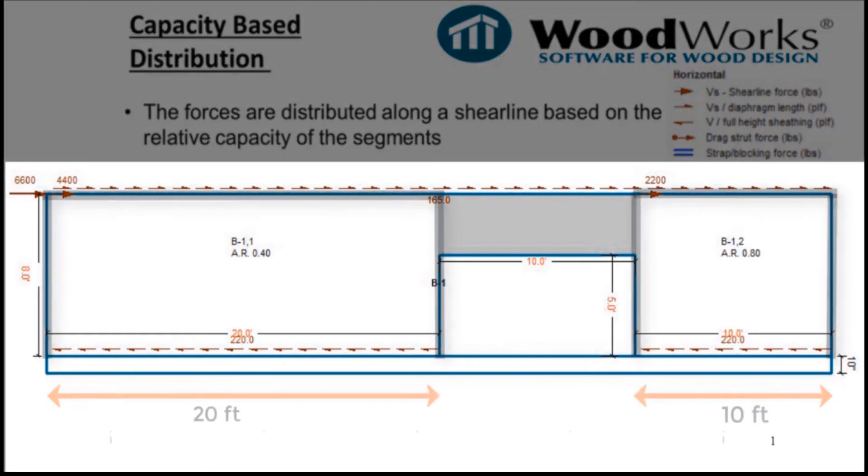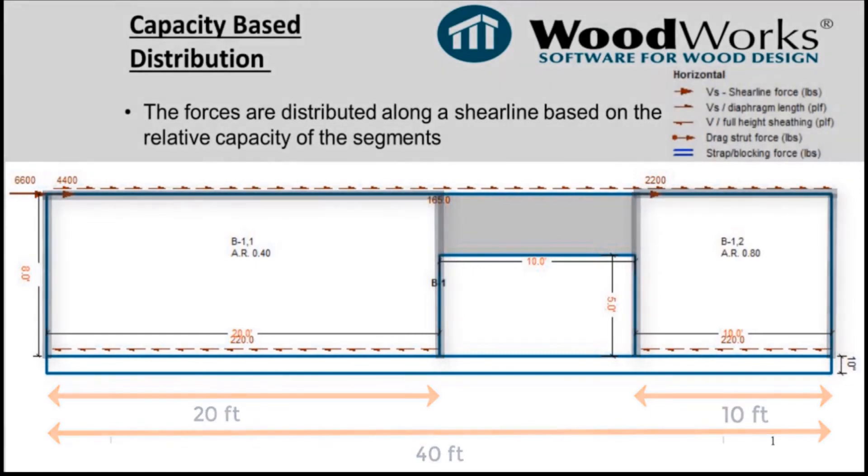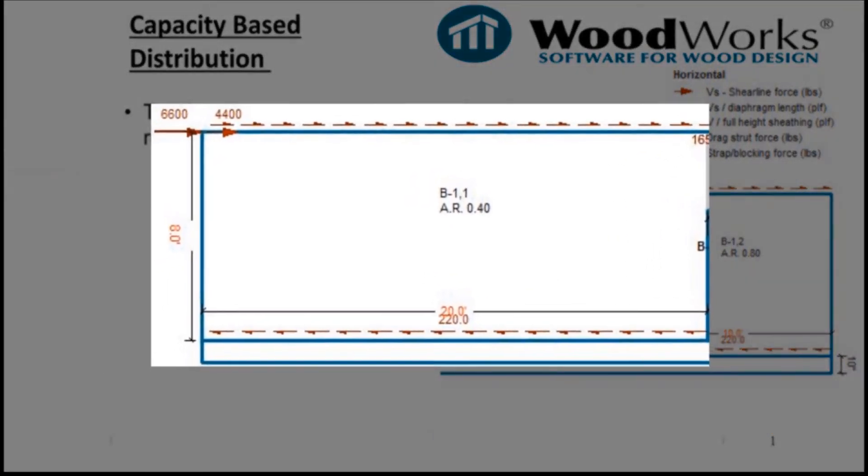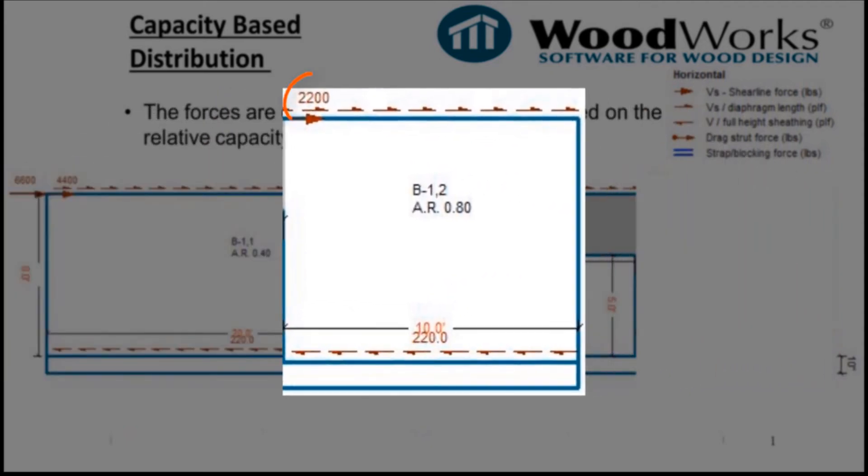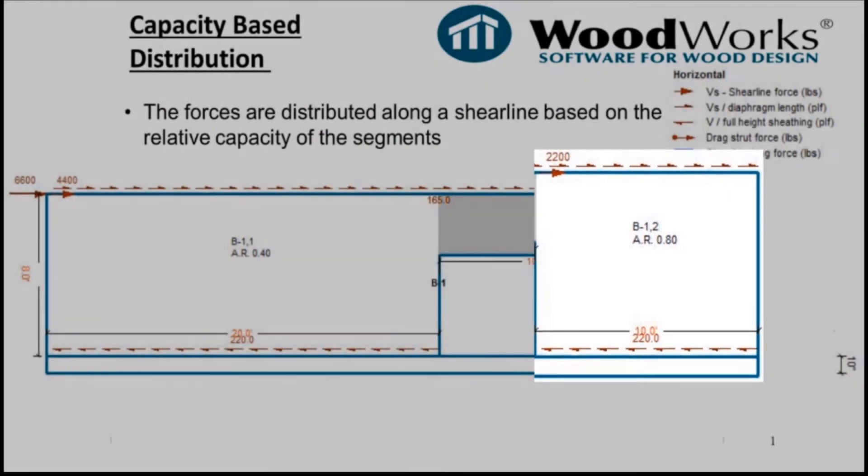This means that the 6,600-pound force is distributed to each segment in proportion to each segment length. This shear line has two shear-resisting segments with a total length of 40 feet. The longer 20 feet segment on the left in this shear wall takes two-thirds of the 6,600-pound force, or 4,400 pounds. The 10 feet segment takes the remaining 2,200 pounds of force.